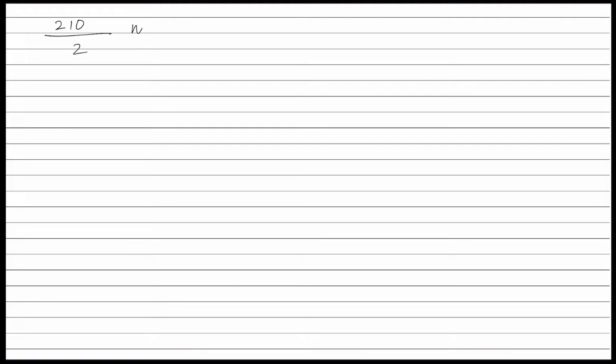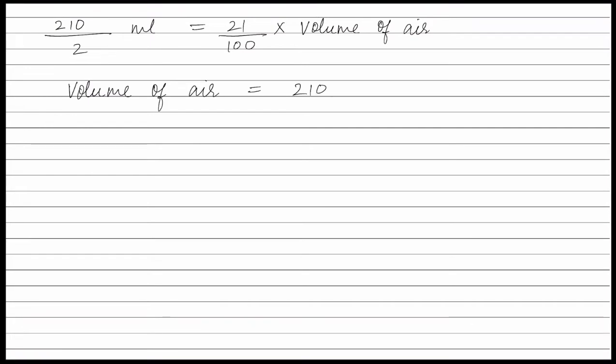According to the question, volume of oxygen is 21% of the volume of air. So we can write: volume of oxygen, that is 210/2 milliliters, is equal to 21/100 × volume of air. Therefore, volume of air equals 210/2 × 100/21, which is equal to 500 milliliters.